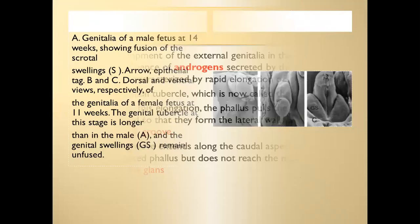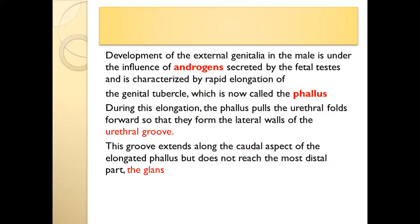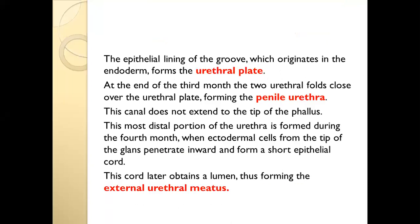The development of external genitalia is under the influence of androgens. If there is sufficient testosterone, we will have normal external genitalia for the male. But if we have hypoandrogenism, we will have a genital anomaly in external genitalia. The genital tubercle elongates and we call it the phallus. With elongation, it pulls the urethral folds, forming a urethral groove. This groove extends along the caudal aspect of the elongated phallus but does not reach to the most distal part, the glans. The urethral groove is lined by epithelium originating from the endoderm — this is the urethral plate. The urethral folds will close over the urethral plate to form the penile urethra.